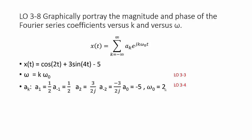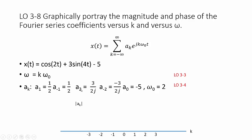To work on learning outcome 3.8, we want to take these a sub k values and graphically portray their magnitude and phase. Notice that these are complex numbers — even if they have no imaginary part, or are purely imaginary, they are still considered complex. We want to graph them versus k, the index for a sub k. For this example, we have k values of 1, negative 1, 2, negative 2, and 0.